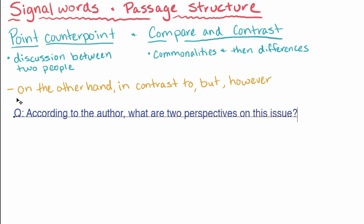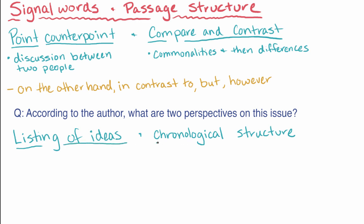Other common structures include listing of ideas, or a chronological structure, where the author walks you through events in the order they happened. In these cases, it's often helpful to look for words like first, second, or third, words that might help you to identify how many different points are being made, or words like next and and then that might help you follow the chain of events.